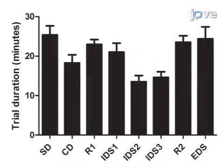Ultimately, an increase in the mean number of trials to reach the criterion between the experimental groups at the reversal stages is interpreted as cognitive inflexibility.